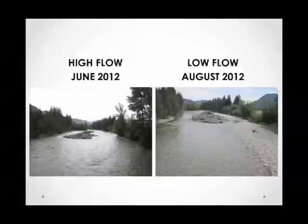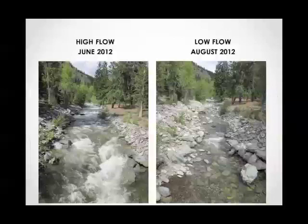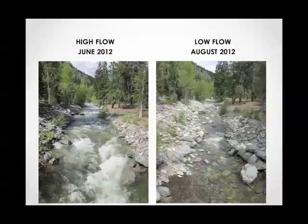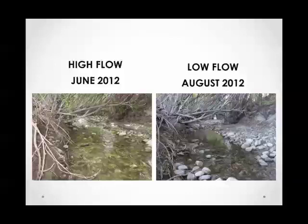These images show the type of streams and conditions where these methods were applied. This upper section in the Methow is a typical river in our study area — bank-full on the left during high flow, with greatly reduced flows by August. A typical tributary in the system might be difficult to cross during high flows but easily hopped across in August. Our smallest stream site was basically just a trickle in August, giving an idea of the range of stream sizes included in the study.